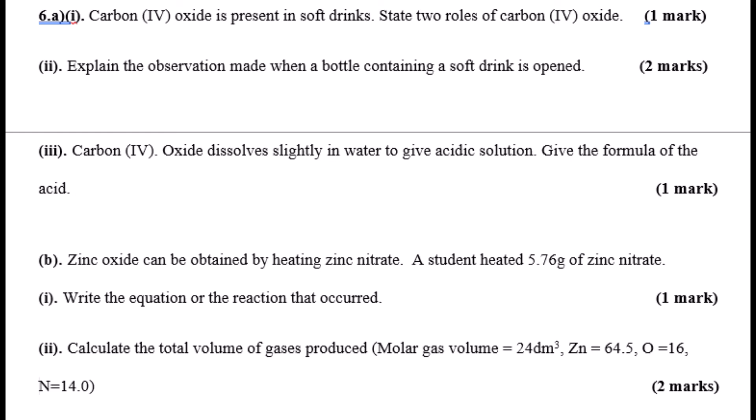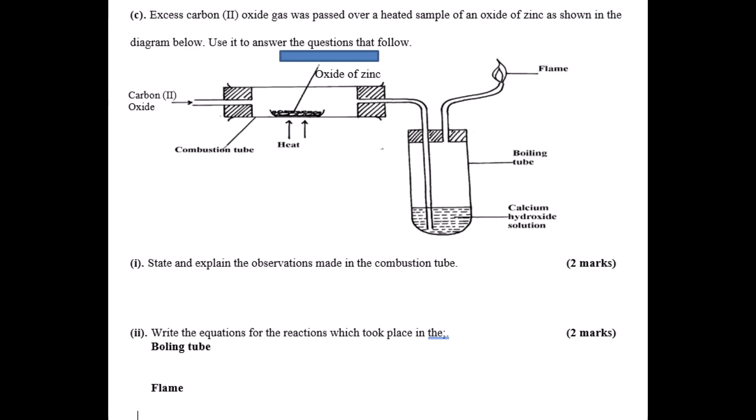Zinc oxide can be obtained by heating zinc nitrate. A student heated 5.76 grams of zinc nitrate. Write the equation that will occur when you heat zinc nitrate, then calculate the total volume of the gases that are produced.